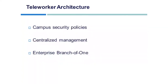Teleworker architecture: campus security policies are implemented using robust, integrated security and identity-based networking services. Staff can securely log on to the network over an always-on VPN and gain access to authorized applications and services. Centralized management minimizes IT support costs. Also called the enterprise branch of one, it allows enterprises to deliver secure voice and data services to remote SOHO offices over a broadband access service.